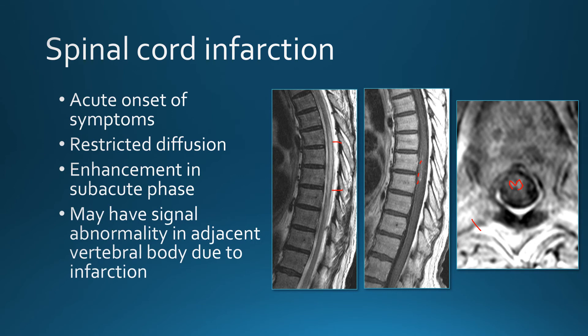On axial images, the enhancement in cord infarction is usually limited to the gray matter — you can see the enhancement pattern in the configuration of the spinal cord gray matter. Occasionally, since the spinal cord is supplied by vessels that also supply the vertebra, you may see infarction of the vertebral body with abnormal signal within the bone marrow at the same level as the spinal cord infarct.